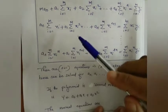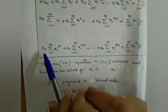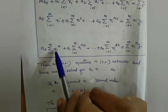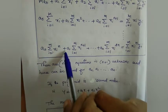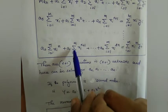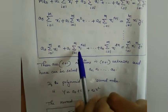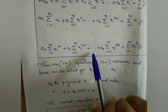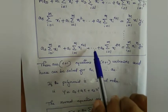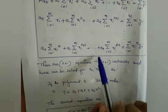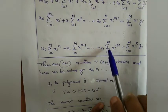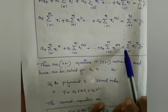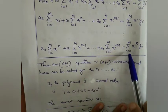The last normal equation is: a0 times summation of xi raised to n, plus a1 times summation of xi raised to n+1, plus a2 times summation of xi raised to n+2, and so on up to an times summation of xi raised to 2n, equals summation of xi raised to n times yi.